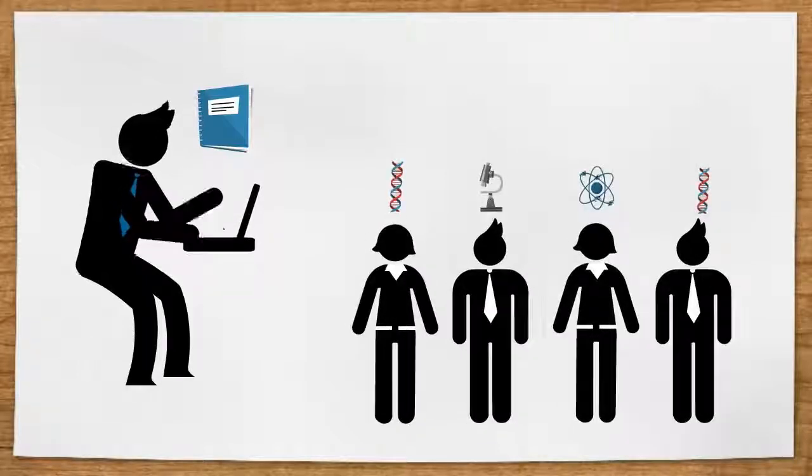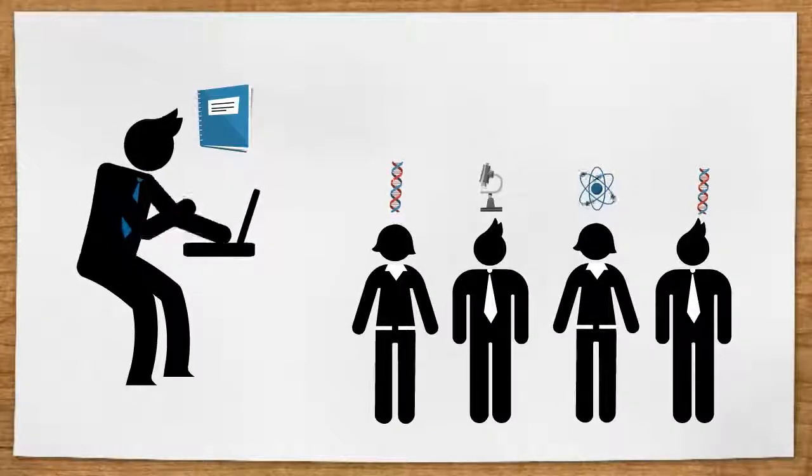The journal's editor sends the article to a group of researchers in the same field. These are the author's peers.